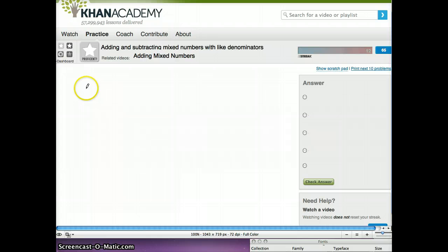The problem that we would give the student is something like 17 and 2 ninths plus 5 and 1 ninth.